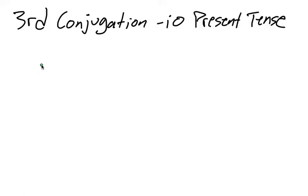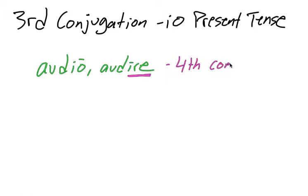Last time we talked about fourth conjugation verbs, and our example was audio, audire. So you might think the verb ends in i-o, it's fourth conjugation. But remember, what tells you the conjugation of a verb is the verb's infinitive. So it's the i-re that tells us this verb is fourth conjugation.